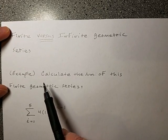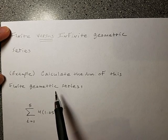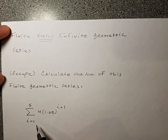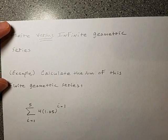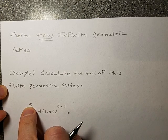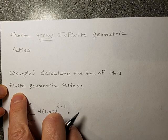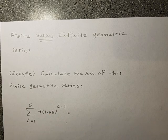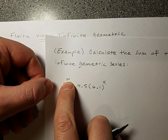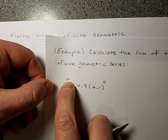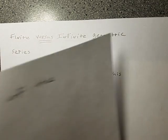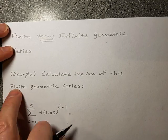So this first problem: calculate the sum of this finite geometric series. What does it mean to be finite? Well, here this would have five terms in it. That's a finite number. Even if it had 100,000 terms, that's still a finite number. As opposed to if the series ran on forever — see that infinity symbol? That's an infinite series. It has more than five terms, more than 100,000 or a million terms, because it never stops. That's the difference between finite and infinite.